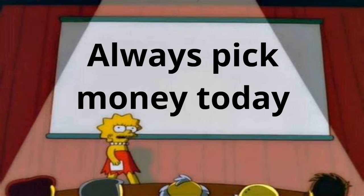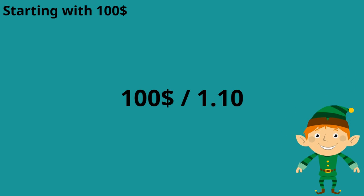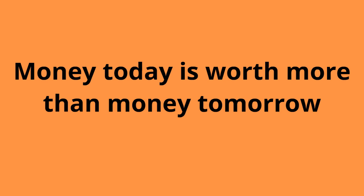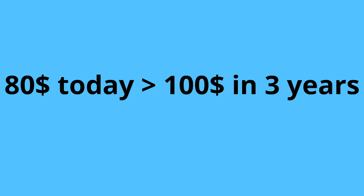This is because eighty dollars now gives you the power to invest and take control, versus a hundred dollars in the future that carries both uncertainty in its availability and lost opportunity to invest. Let's look to the future: if you think the S&P 500 will grow 10% annually, we take the hundred dollars and divide it by 1.10 each year. After three years, that equals $75.13. So a hundred dollars three years from now is worth only $75.13 today. The real choice is: do you want $75.13 today, or eighty dollars today?